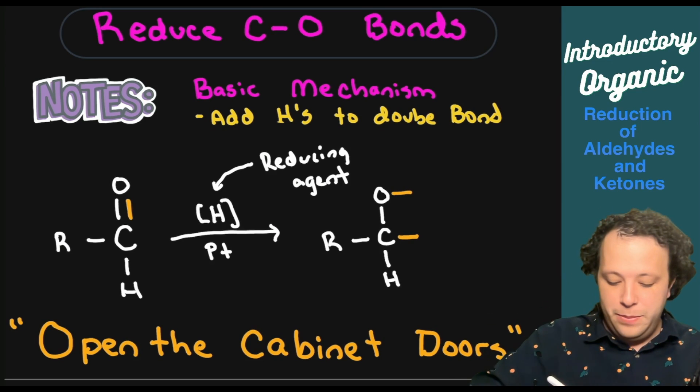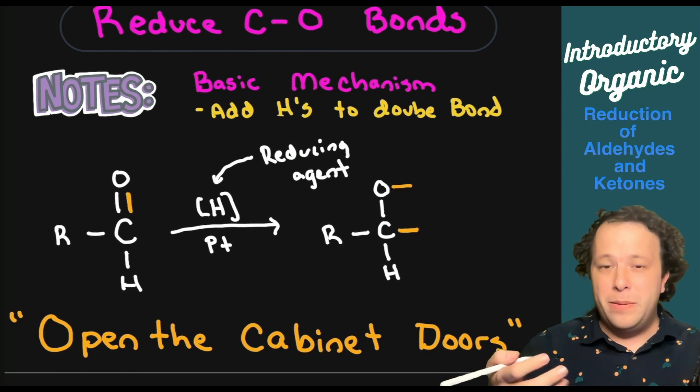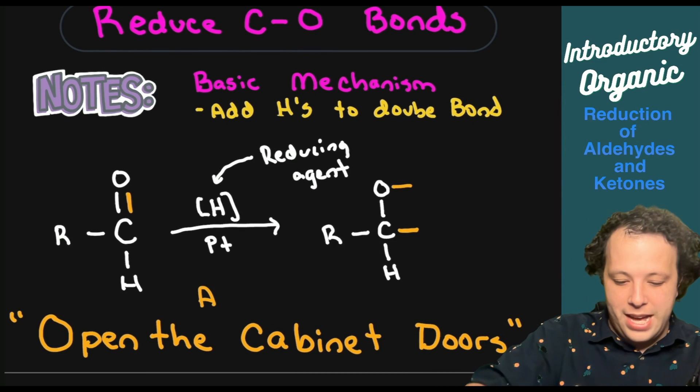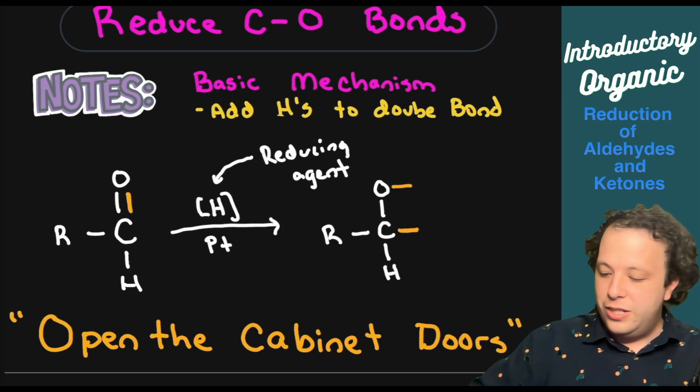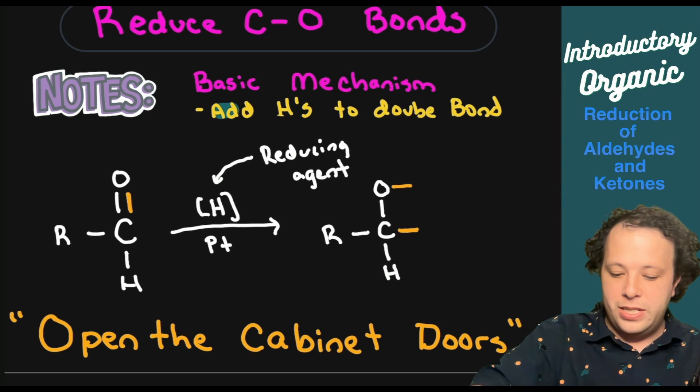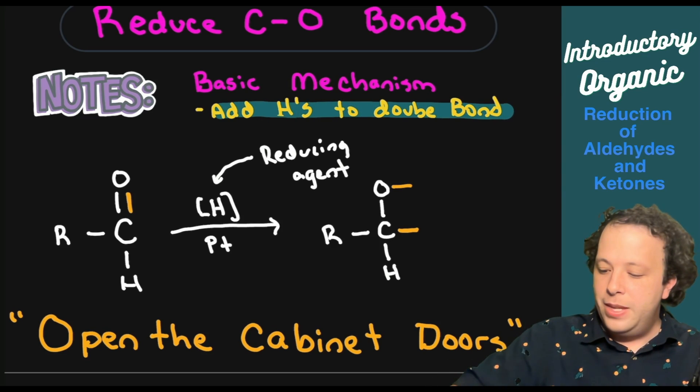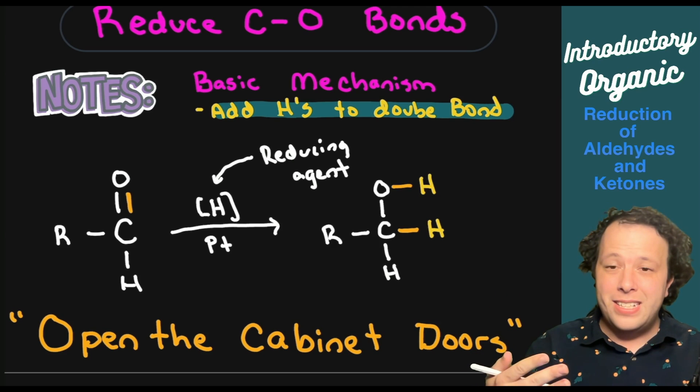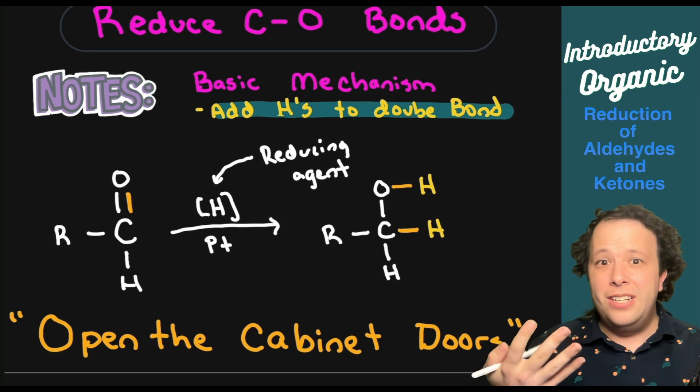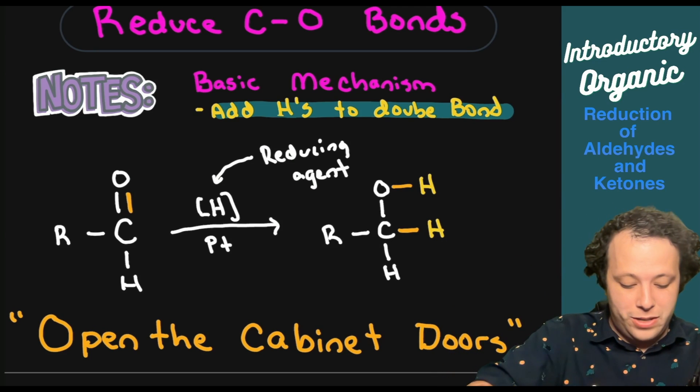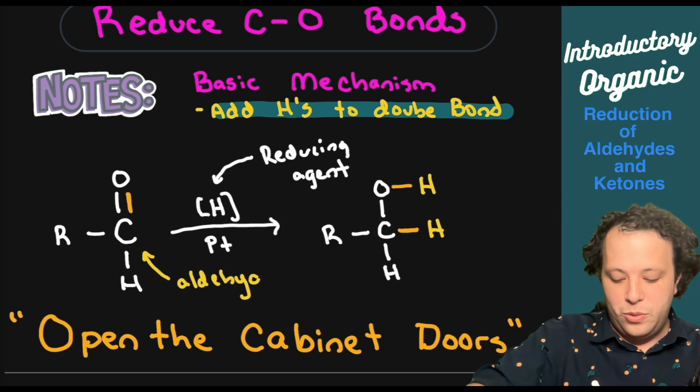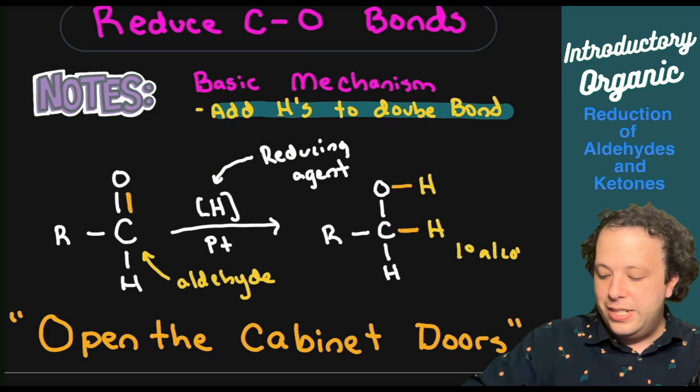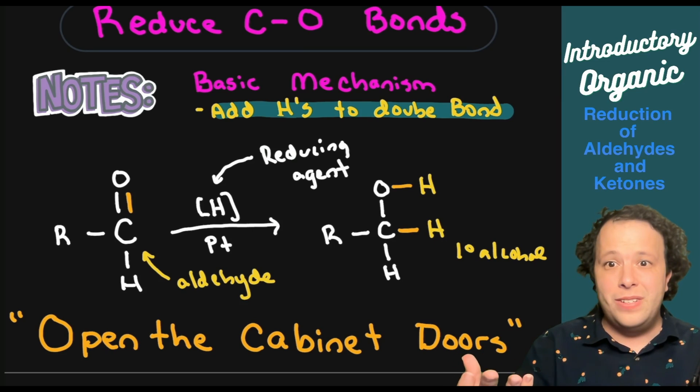As we open up those doors, we are adding hydrogen. We're adding hydrogens to the double bond, a hydrogen on each individual part. We have on the left hand side an aldehyde turning into a primary alcohol when that happens. Aldehyde goes to a primary alcohol for this particular reduction example.